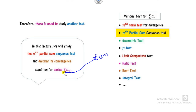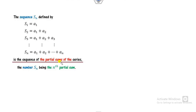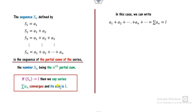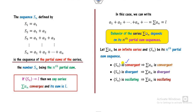The nth partial sum sequence corresponding to the series is defined as S₁, S₂, and so on, where Sₙ is called the nth partial sum, and the corresponding sequence is called the partial sum sequence. If you prove that this Sₙ — the sum of finite terms — converges to L, then we can say the series also converges to L and its sum is L. The behavior of the infinite series directly depends on the nth partial sum sequence Sₙ: if the nth partial sum sequence is convergent, the series is also convergent.